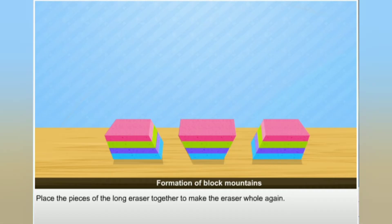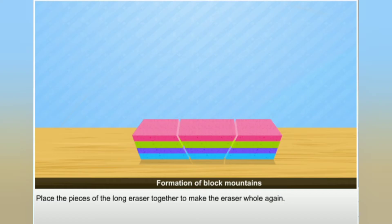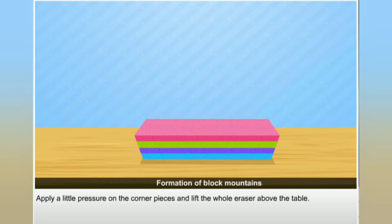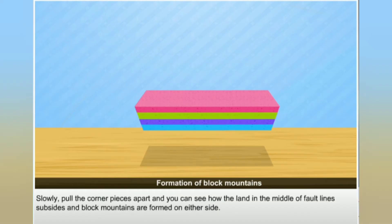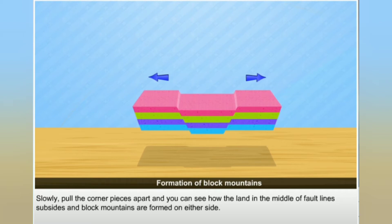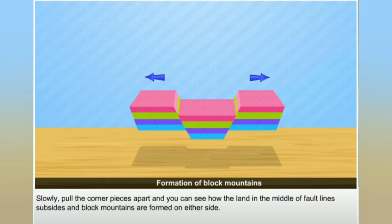Place the pieces of the long eraser together to make the eraser whole again. Apply a little pressure on the corner pieces and lift the whole eraser above the table. Slowly pull the corner pieces apart and you can see how the land in the middle of fault lines subsides and block mountains are formed on either side.